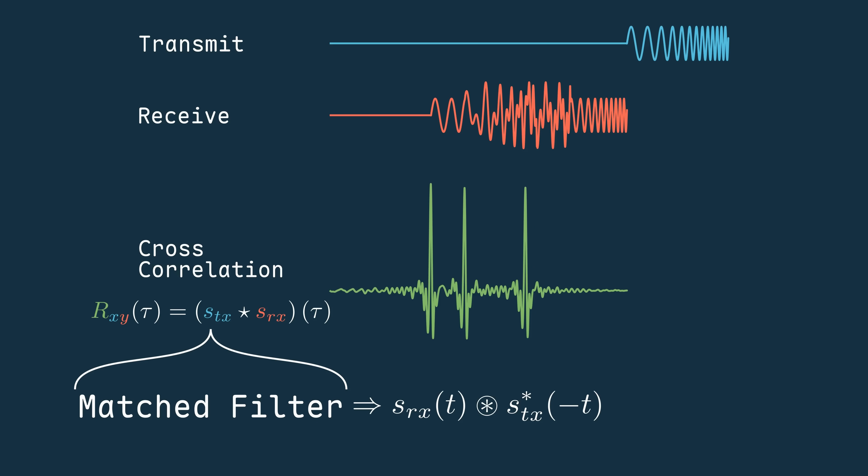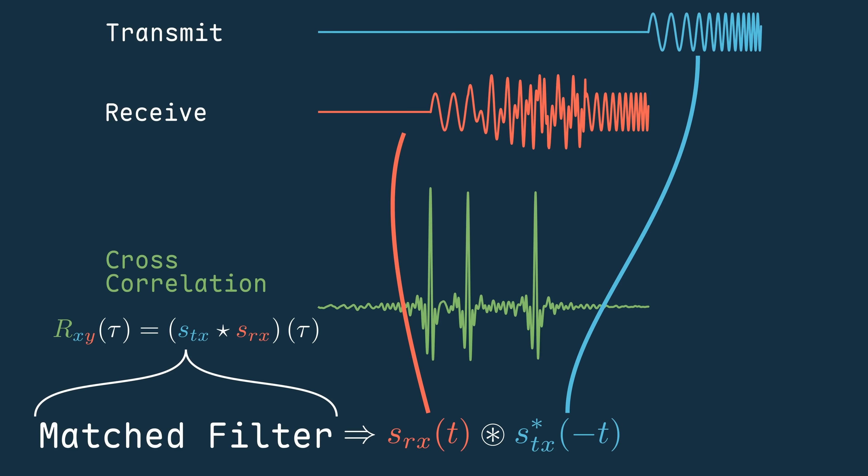In practice, that's exactly what we've been doing here, sliding one waveform across another to find the point of maximum overlap. So pulse compression is essentially achieved through matched filtering.